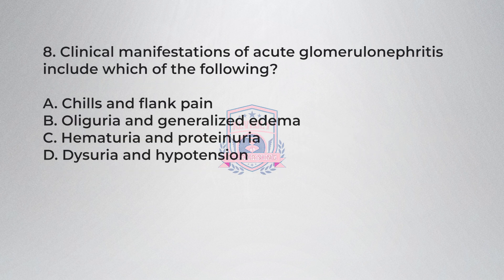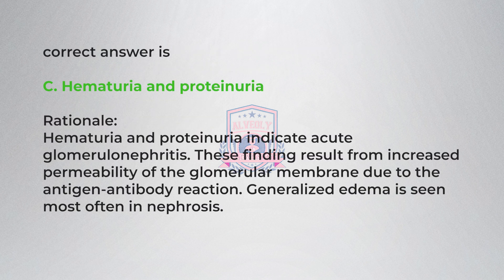Question 8: Clinical manifestations of acute glomerulonephritis include which of the following? A) Chills and flank pain, B) Oliguria and generalized edema, C) Hematuria and proteinuria, D) Dysuria and hypertension. Correct answer is C, hematuria and proteinuria.